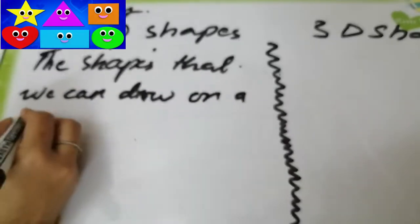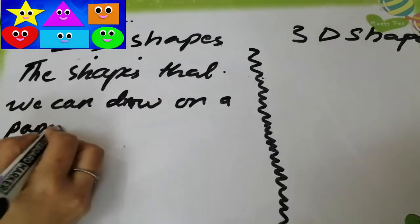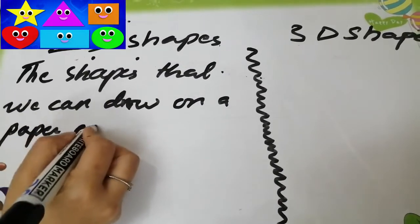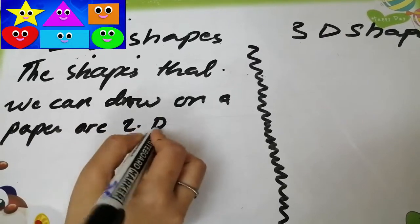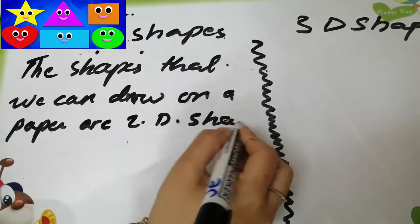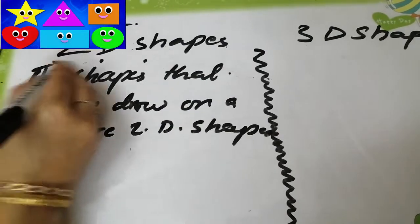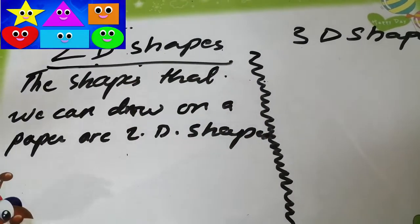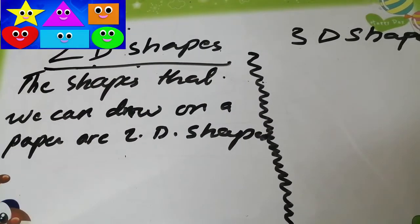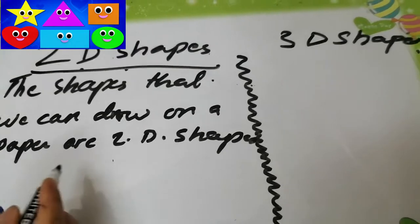Okay students, what is the definition of 2D shapes? The shapes that we can draw on a paper are called 2D shapes.